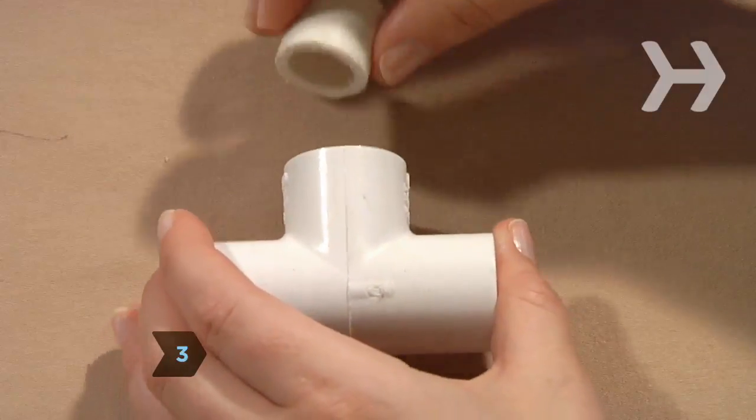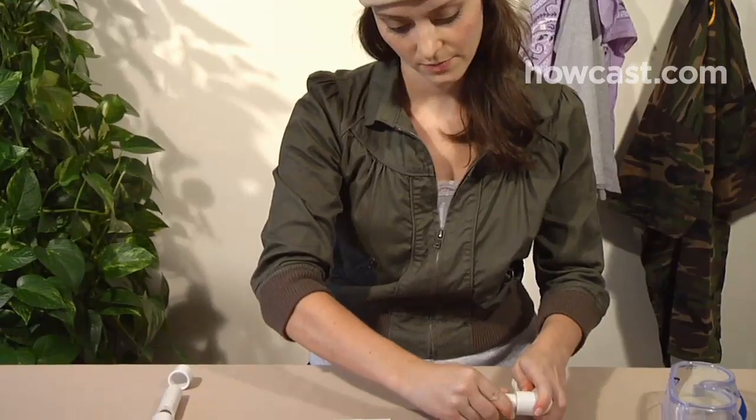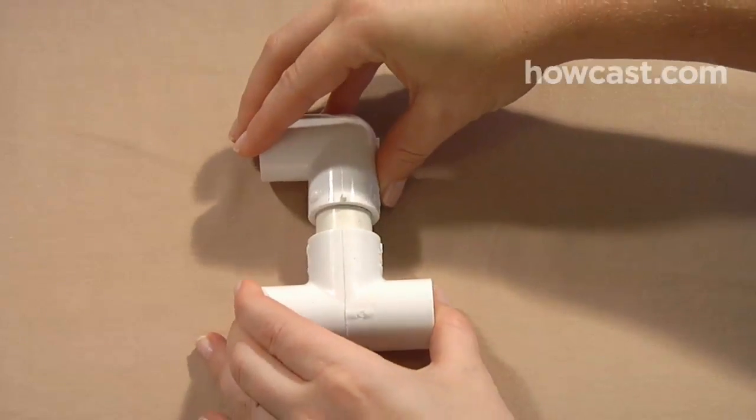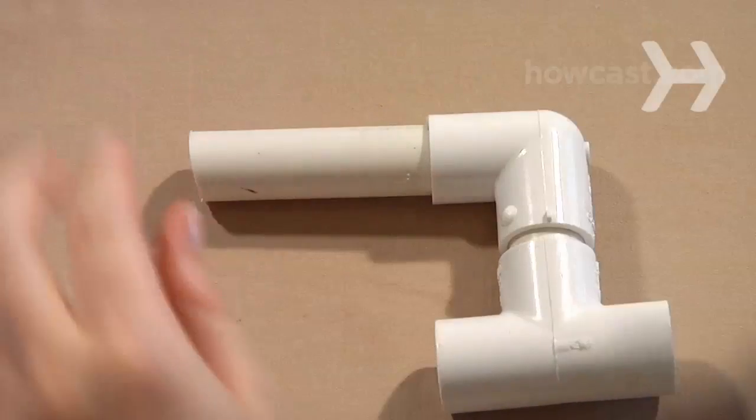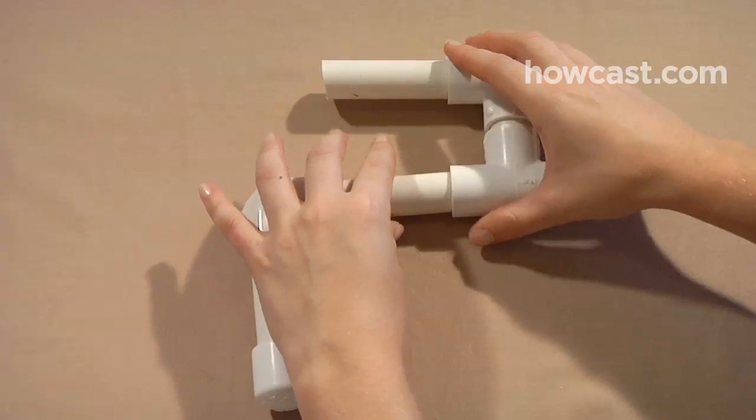Step 3. For the mouthpiece, put the 1-inch piece in the bottom of the T connector. Connect an elbow to the other side of the piece followed by a 3-inch segment. Attach one end of the T connector to the 3-inch piece from the handle.